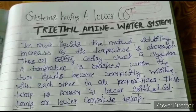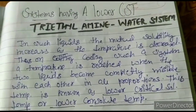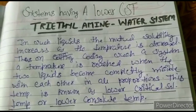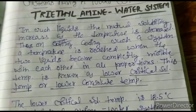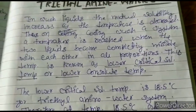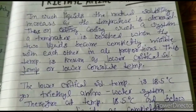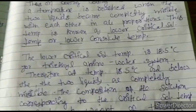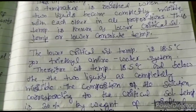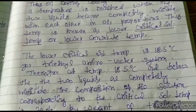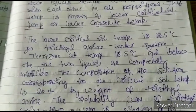The system having a lower critical solution temperature — for example, the triethylamine-water system. In such liquids, the mutual solubility increases as the temperature is decreased. On cooling such a system, a temperature is reached when the two liquids become completely miscible with each other in all proportions. This temperature is known as the lower critical solution temperature. The lower critical solution temperature is 18.5 degrees Celsius for the triethylamine-water system; therefore at 18.5 degrees Celsius and below, the two liquids are completely miscible.